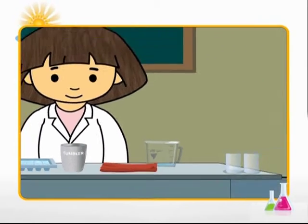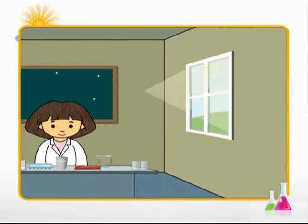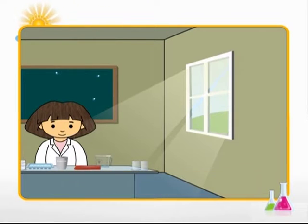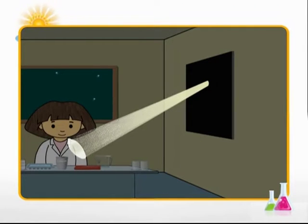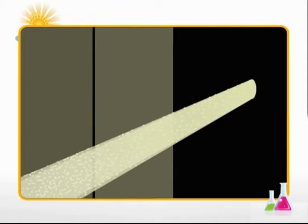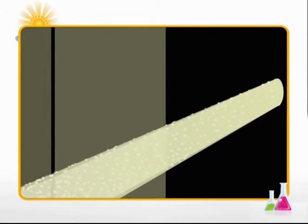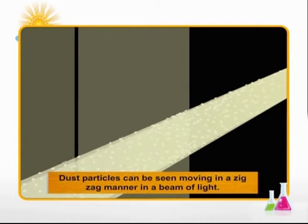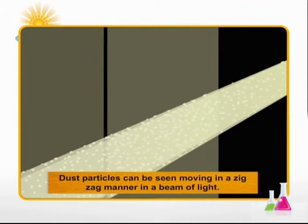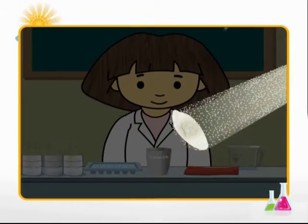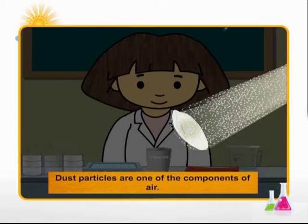We know that air is made up of different gases. But are solid dust particles also present in air? Let us confirm this through an experiment. It's dark in our little chemistry lab because the windows have been covered with black chart paper. We have just left a tiny hole on the chart paper pasted on a window facing the sun. What do you see as you look at this hole? A small beam of sunlight shines through, and in this beam of light, some particles can be seen moving around crazily. This is dust. You have just seen for yourself that solid dust particles are also a part of air.